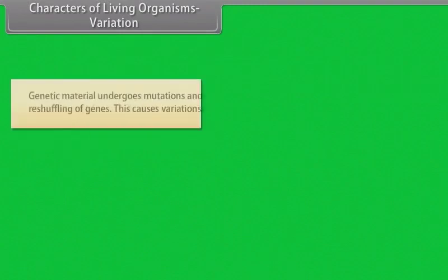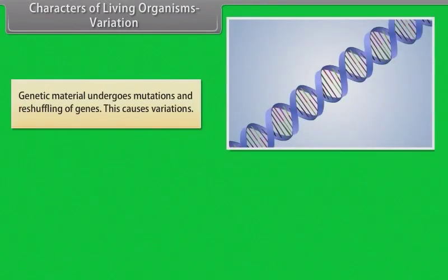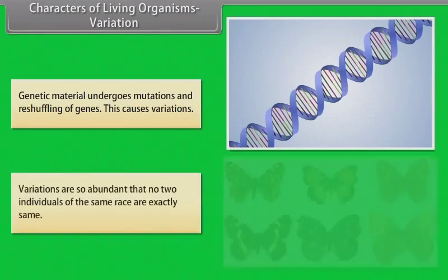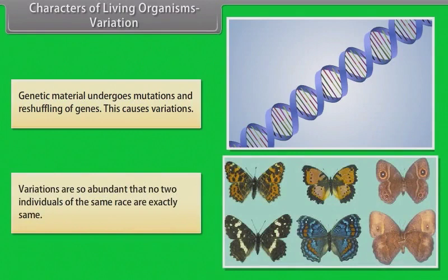Genetic material undergoes mutations and reshuffling of genes, which causes variations. Variations are so abundant that no two individuals of the same race are exactly the same.